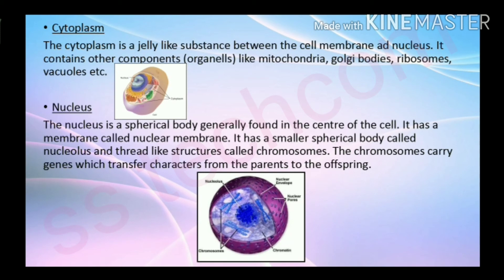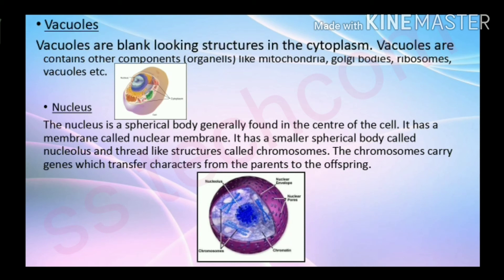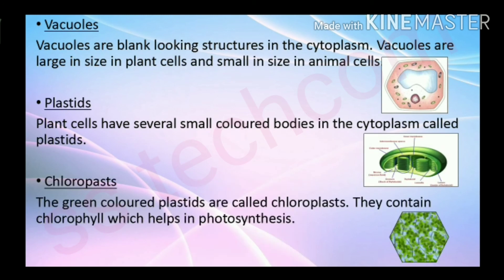The nucleus is a spherical body generally found in the center of the cell. It has a membrane called the nuclear membrane, a smaller spherical body called the nucleolus, and thread-like structures called chromosomes. Chromosomes carry genes which transfer characters from parent to offspring.